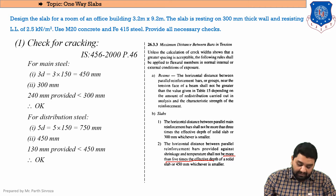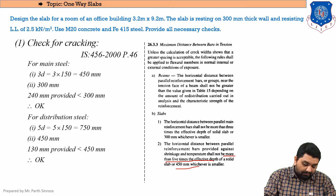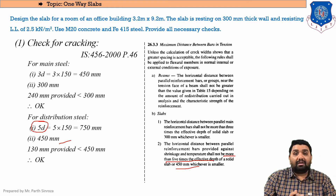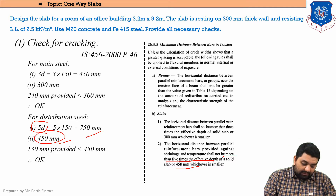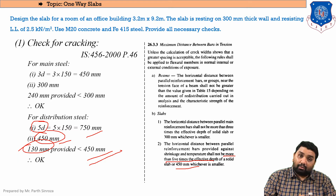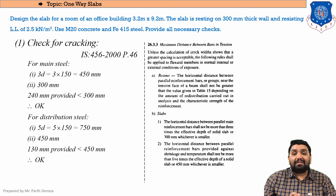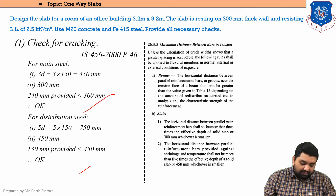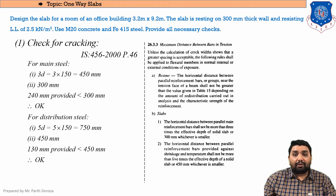For distribution steel, the spacing shall not be more than 5 times the effective depth or 450 mm, whichever is smaller. So: 5d = 5 × 150 = 750 mm, and the second case is 450 mm. The smaller value is 450 mm. The spacing provided for distribution steel was 130 mm, which is less than 450 mm, so it is safe. Check number one — check for cracking — is now completed.